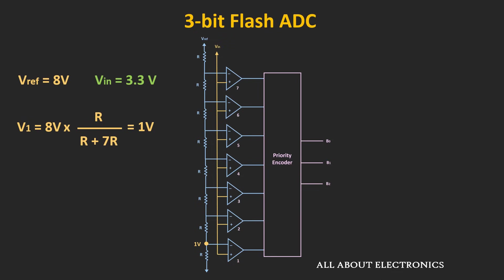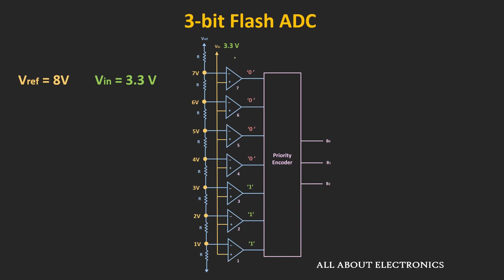Similarly, the value of V2 will be equal to 2V, and likewise the value of V7 will be equal to 7V. The input voltage is compared with all these reference voltages using the comparators. For the input of 3.3V, the output of the first 3 comparators will be high while the output of the remaining comparators will be low, because the reference voltages for the first 3 comparators are 1V, 2V and 3V, and as they are less than 3.3V, the output of the first 3 comparators will be high. The output of all these comparators is given as input to the priority encoder.